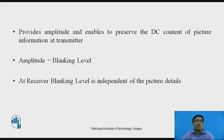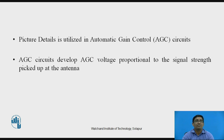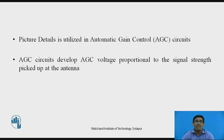At the receiver, the blanking level is independent of the picture details. This is utilized in the automatic gain control (AGC) circuit, which develops an AGC voltage proportional to the signal strength picked up at the antenna.